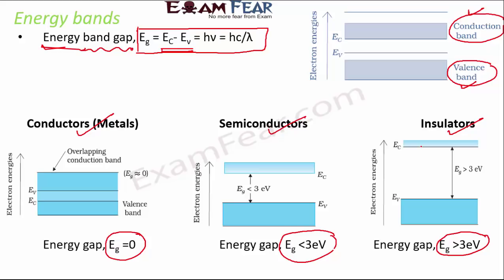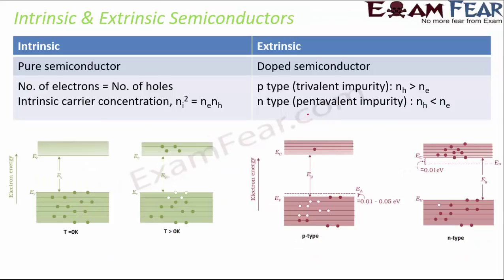In this lesson we are primarily going to focus on semiconductors. This part is a quick recap; for details, you can refer to the class 12 semiconductor electronics video on examfear.com. There are two types of semiconductors: intrinsic and extrinsic. An intrinsic semiconductor is a pure semiconductor with no impurity, and the number of electrons equals the number of holes.